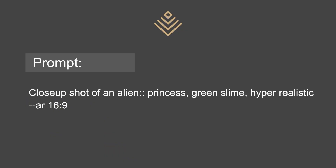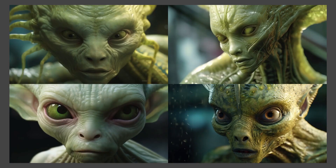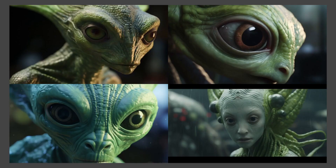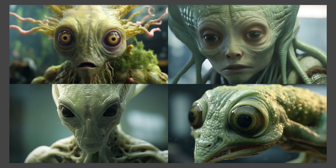Now let's start to add some double colons into this prompt. The first place I'm going to add it is after the word 'alien'. I leave no space between the two colons, and I put it right after the word alien. Here are those results. If I'm looking for a specific style, this is how I can manipulate the prompt to get more of what I'm looking for. If I wanted the emphasis to be more on the alien, I would use the double colon right after 'alien', because all of these images are more alien-like.